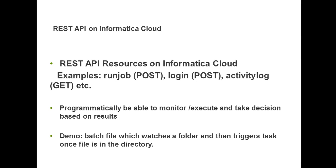Quite a few resources on Informatica Cloud are REST API enabled. A few of these resources are the run job resource, which does a POST request on the Informatica Cloud REST API and runs a job. The login resource does a POST request and creates a secure session, providing a secure session ID. We also have the activity log resource, which can do a GET request and retrieve the activity log for any Informatica Cloud org.